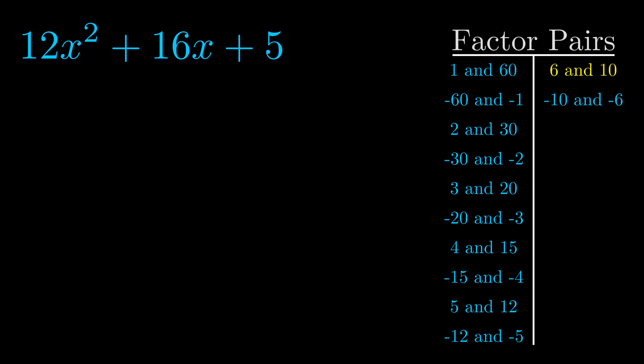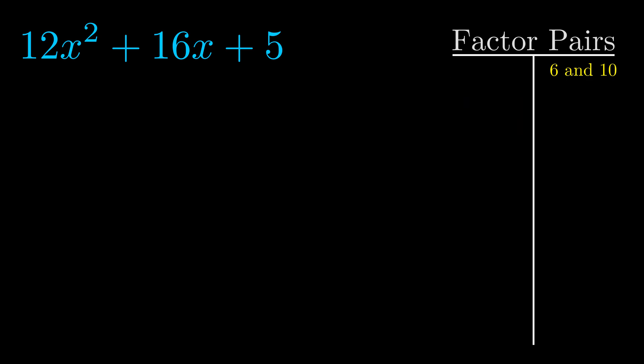And really this is the only factor pair that we need. Now once we have this factor pair, what we want to do is use it to split up the b value.